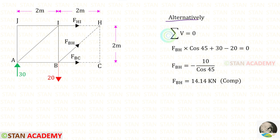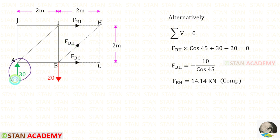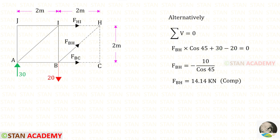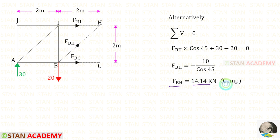Alternatively, using sigma V equals zero: 30 acts upwards (positive), 20 acts downwards (negative). FBH is inclined, so to make it vertical we need 45 degrees. FBH acts upwards so it is positive, multiplied by cos 45. Finally, for FBH we get 14.14 kilo-Newton, which is compressive.